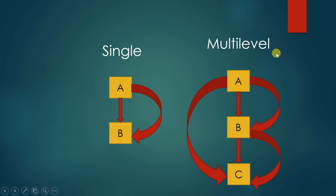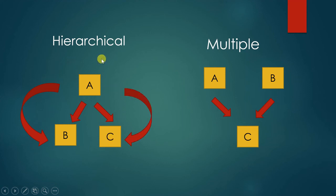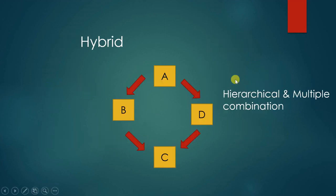Hierarchical inheritance has one parent class A and two derived classes B and C. Both B and C inherit the properties of A. Multiple inheritance means two parent classes and one derived class — this is not possible in Java. This is an important interview question. To achieve multiple inheritance in Java, we use interfaces.